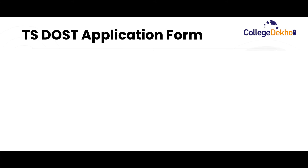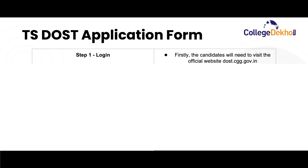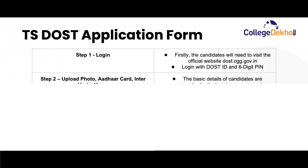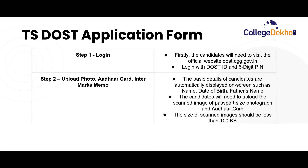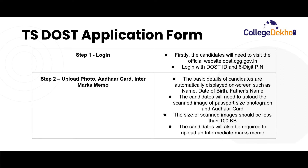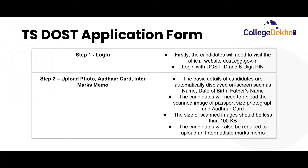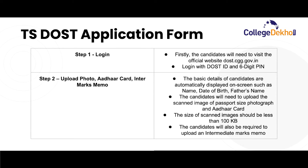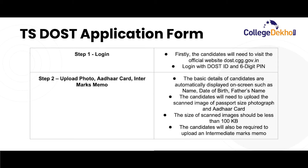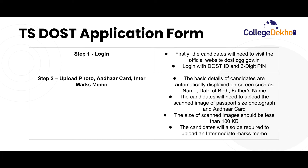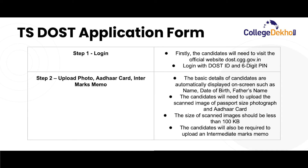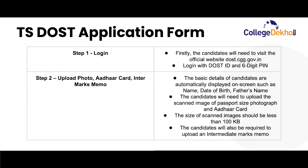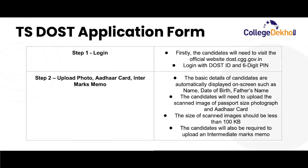How to fill the TS DOST application form: the very first step is to log in. Candidates will need to visit the official website and log in with their DOST ID and 6-digit PIN received via SMS. The next step is to upload photo, Aadhaar card and intermediate marks memo. Basic details such as name, date of birth and father's name are automatically displayed. Candidates will need to upload scanned images of passport size photograph and Aadhaar card; the size of scanned images should be less than 100 KB. The intermediate marks memo must also be uploaded.